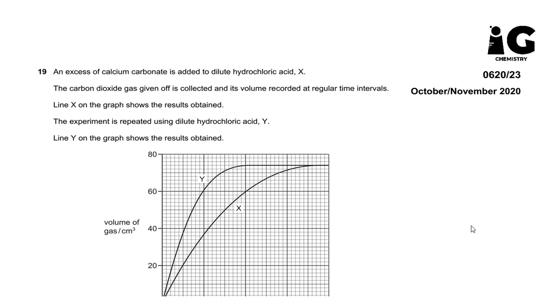Question 19. An excess of calcium carbonate is added to dilute hydrochloric acid X. The carbon dioxide gas given off is collected and its volume recorded at regular time intervals. Line X on the graph shows the results obtained.